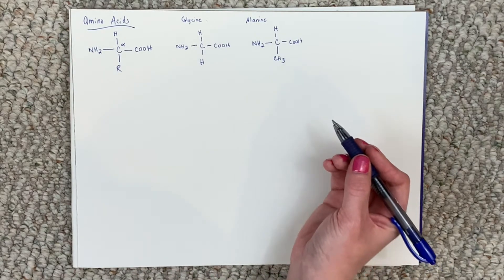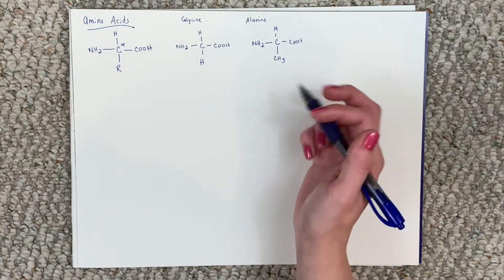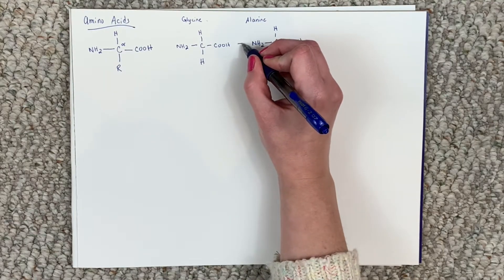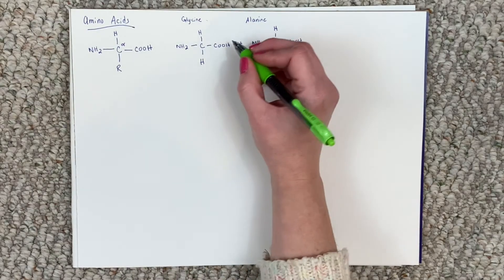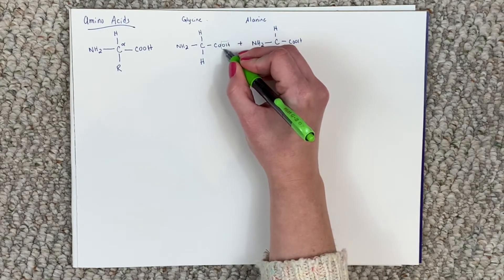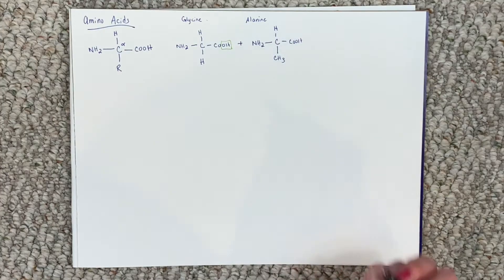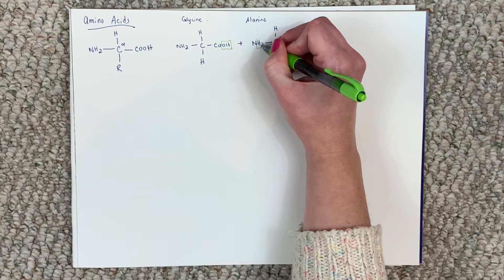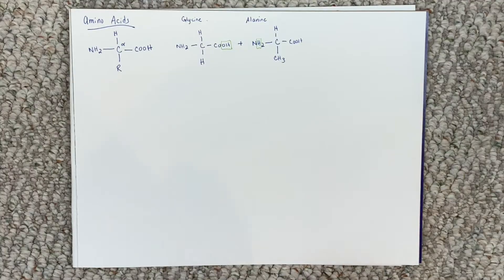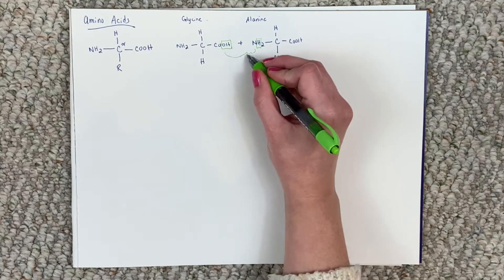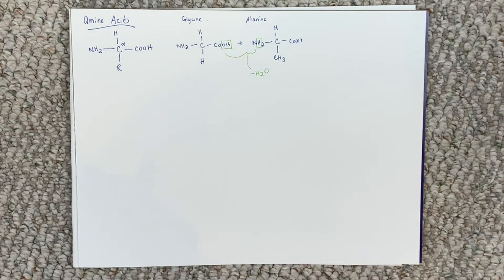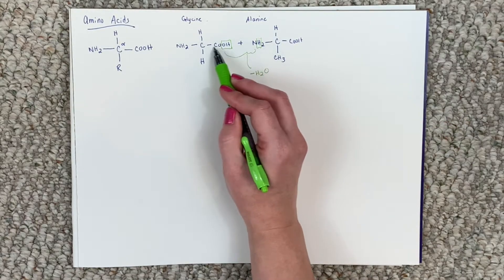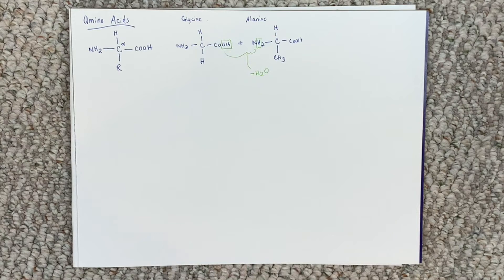Now, if you want to start combining amino acids together, they combine by something called a peptide or amide bond. And what happens here is we have this OH on one carboxylic acid combine with one of the hydrogens from the amine group. So when this happens, we actually lose a molecule of water, but we form a peptide bond between these two amino acids.